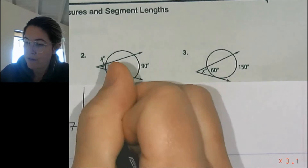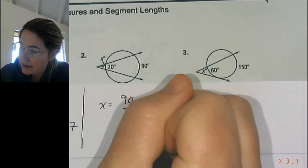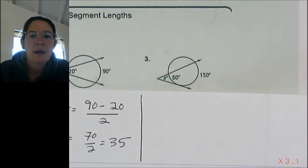Number two: now we are intersecting outside. So the angle formed is equal to the difference — the big arc minus the small arc divided by 2. That gives us 70 over 2, which is 35 degrees.